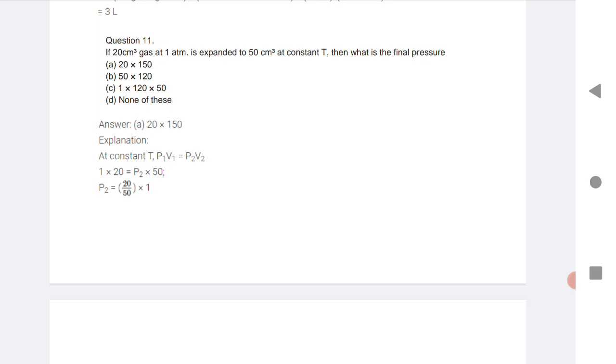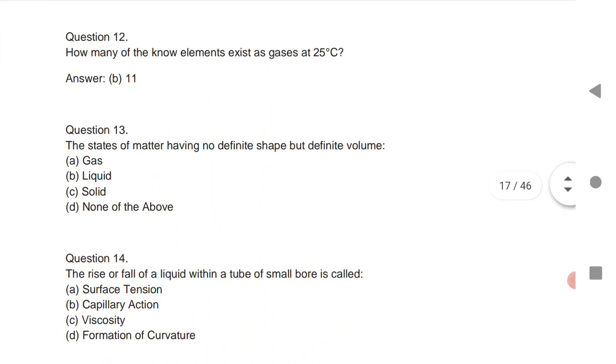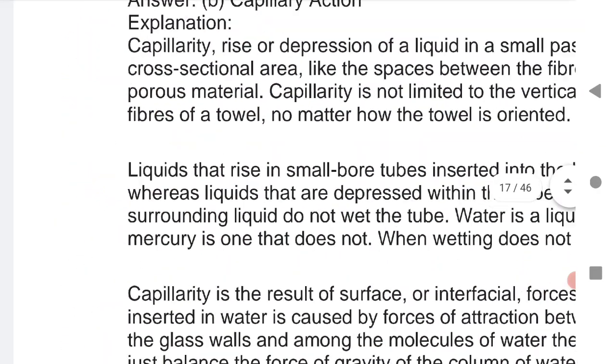This is a very important question: How many of the known elements exist as gases at 25 degrees Celsius? 11 elements. Next is 14th question.